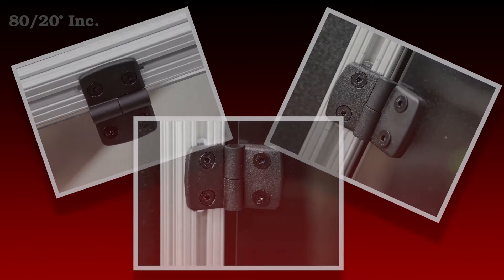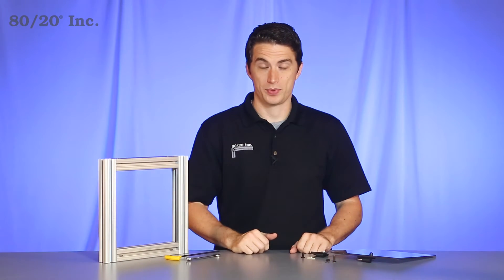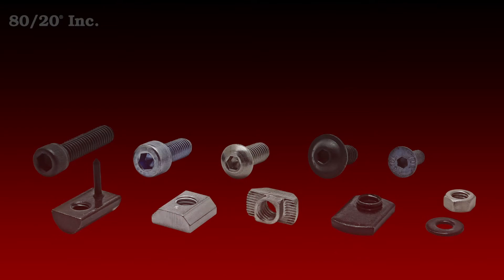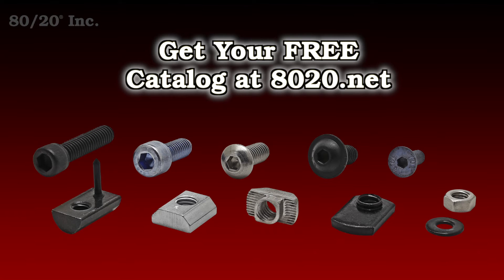Now the great thing about this hinge is that it requires no machining to your bar. However, any panels that you use will need through holes machined into them, and you'll also need bolt assemblies to use this hinge. More information on machining services and recommended bolt assemblies can be found in the 8020 product catalog.